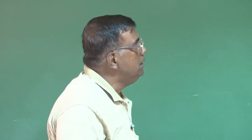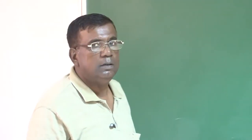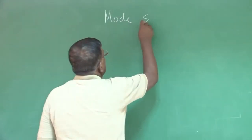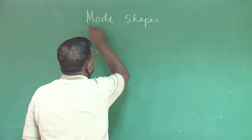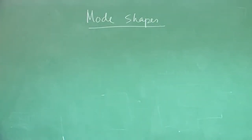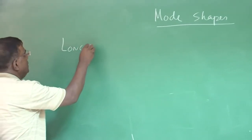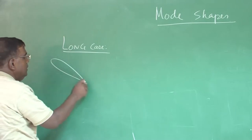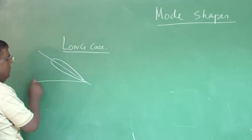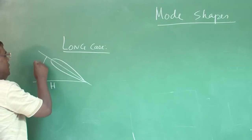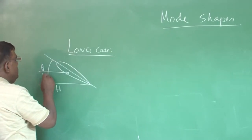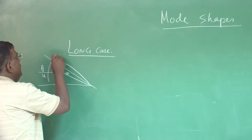Good morning friends. I thought that we must also discuss something on mode shapes. Before we talk about mode shapes, let us try to understand what we are talking about. Let us say if I take a longitudinal case, then if I define this as the horizontal, this angle is theta, and if this is the relative velocity, then this is u and this angle is alpha.